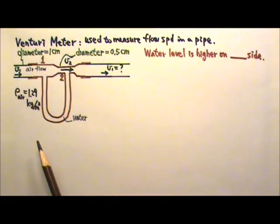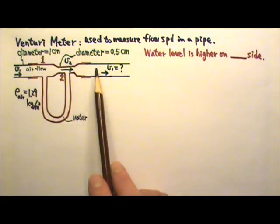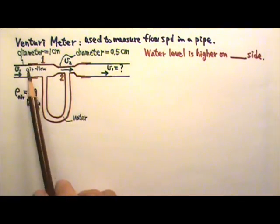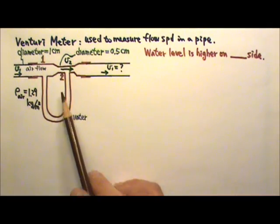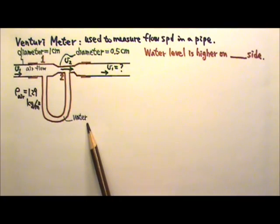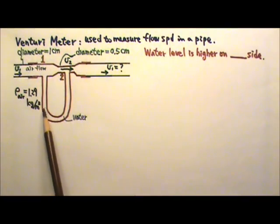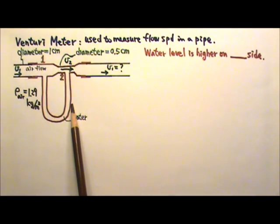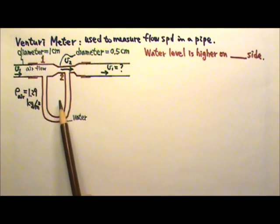For this particular problem, I have air flowing in the pipe, and I'm using this venturi meter to measure the flow speed V1 in the pipe. The U-shaped tube of the venturi meter is partially filled with water. Because the air flows through the top portion of the meter, the water level on the two sides of the U-shaped tube are not equal. Water level should be higher on which side?